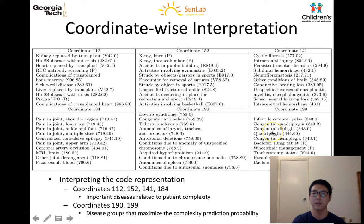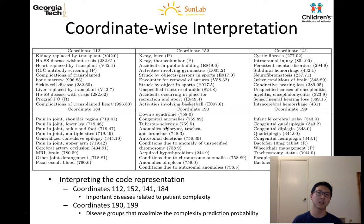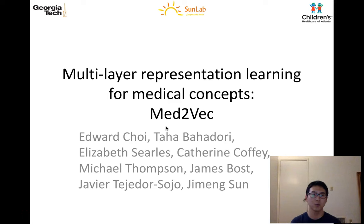Coordinate 199 is related to congenital paralysis, and coordinate 1,9,0 is related to congenital chromosome analyses. You can see that these are indeed complex or harsh conditions. The rest of the details are in the paper, including experiments on two predictive tasks and scalability. Thank you very much for listening.